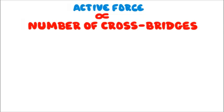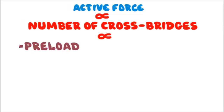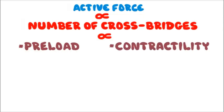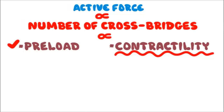The number of cross bridges during systole depends on the preload factor and the contractility factor. In a previous video we have already discussed preload, so in this video we will talk about contractility in detail — the second factor that affects the systolic performance of the ventricle — and we will see how it differs from the preload factor.